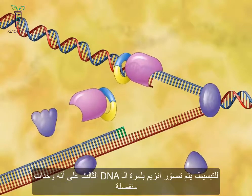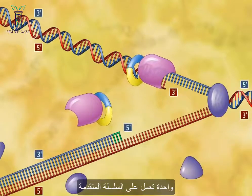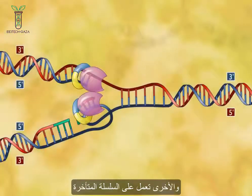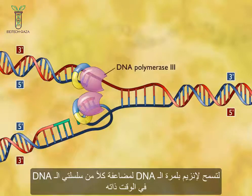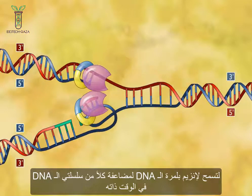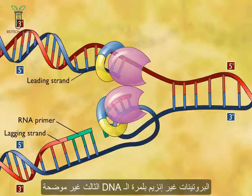For simplicity, DNA polymerase 3 has been depicted as separate units, one acting on the leading strand and the other acting on the lagging strand. The current view is that the two subunits function together, with the DNA on the lagging strand folding to allow the dimeric DNA polymerase molecule to replicate both strands of the parental DNA duplex simultaneously. Proteins other than DNA polymerase 3 are not shown.